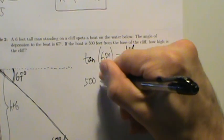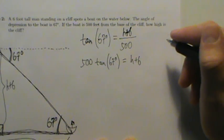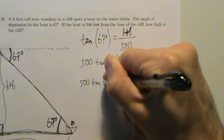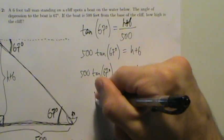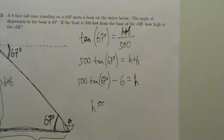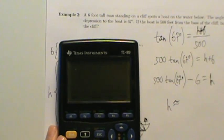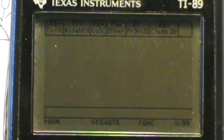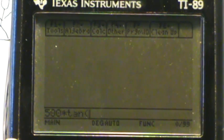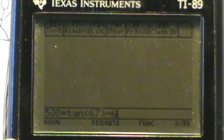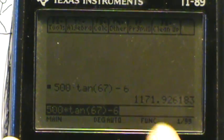Multiply both sides by 500: 500 times the tangent of 67 degrees equals h plus 6. Now subtract 6 from both sides: 500 times the tangent of 67 degrees minus 6 equals h. Now we can toss that into a calculator. First make sure we're in degree mode, because we're dealing with degrees not radians. So 500 times tangent of 67 degrees, minus 6 — that's approximately 1171.926183.